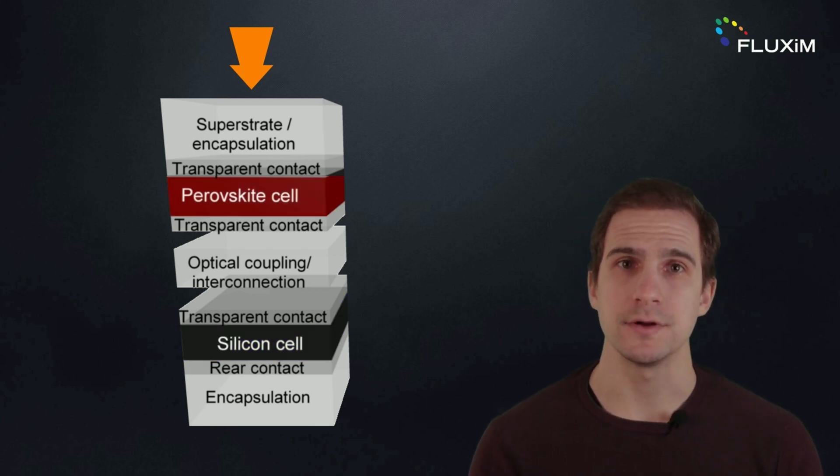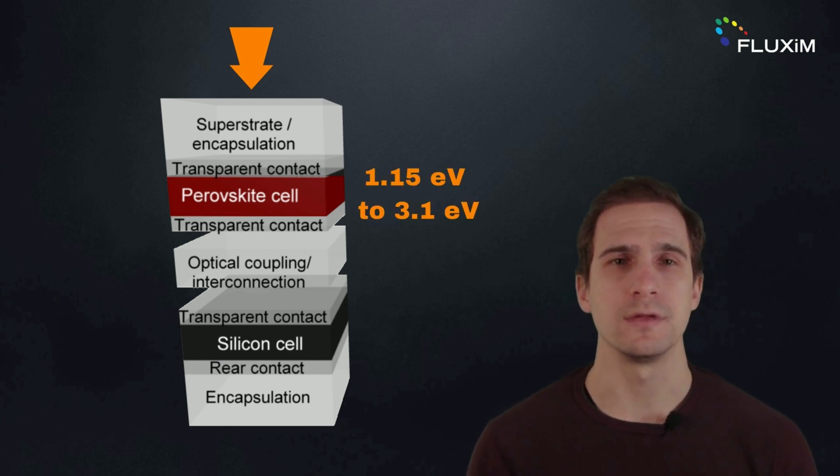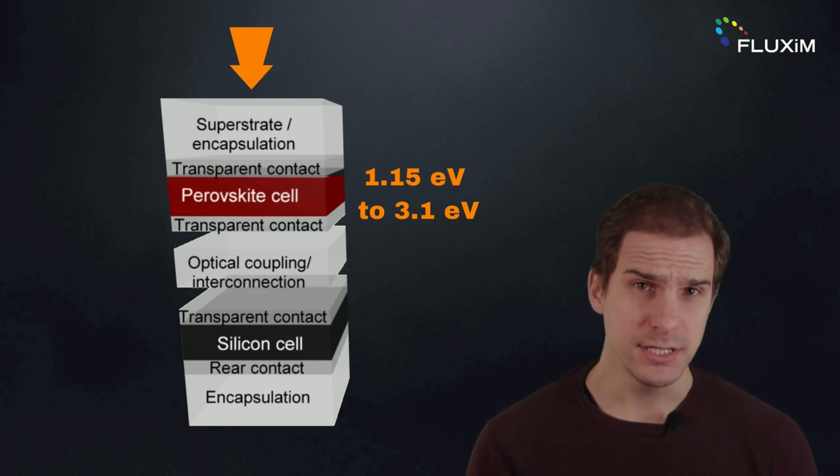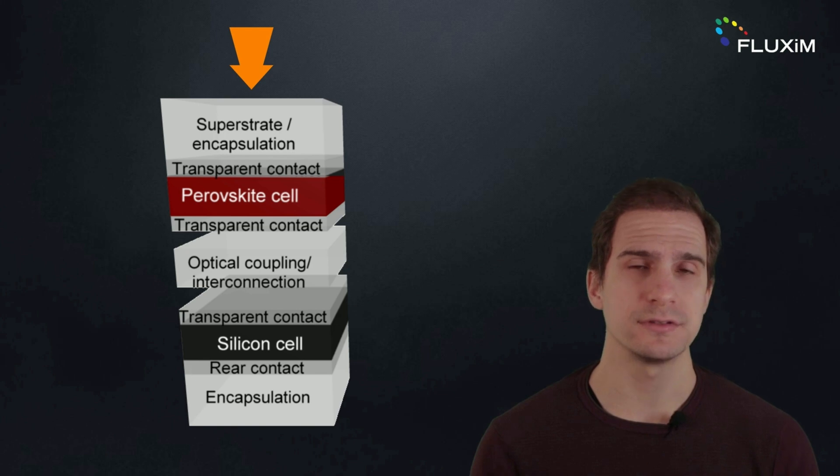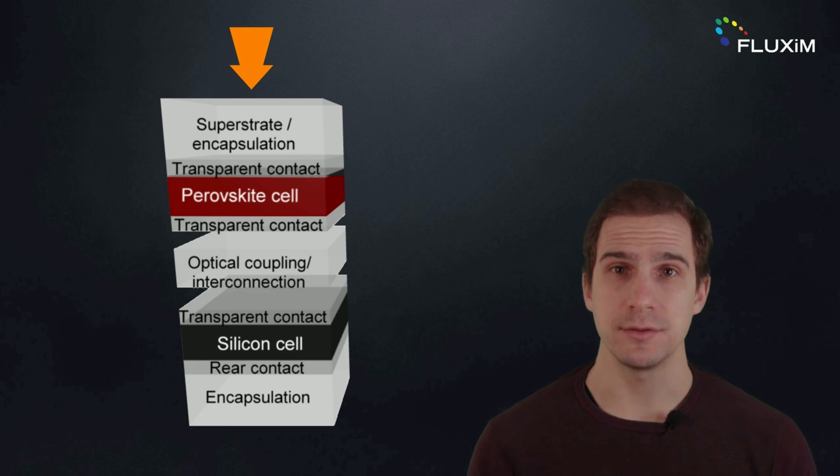Perovskites are a great material for the top cell, as they can easily be tuned to have a band gap between 1.15 and 3.1 eV. They can be deposited at low temperatures with solution process methods like spin coating, avoiding any damage to the bottom cell during the fabrication of the two-terminal solar cells. Additionally, perovskites have a direct band gap and a strong light absorption coefficient.